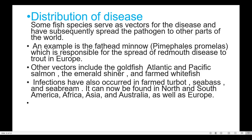Other vectors include goldfish, Atlantic and Pacific salmon, the emerald shiner, and the farmed whitefish. Infections have also occurred in farmed turbot, sea bass, and sea bream. This disease is found in North and South America, Africa, Asia, Australia, as well as Europe.